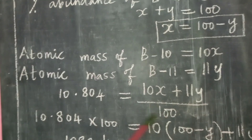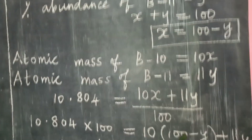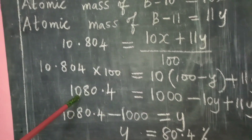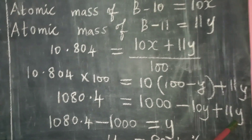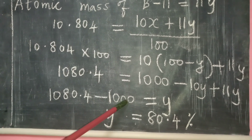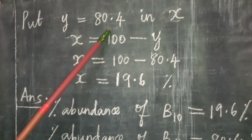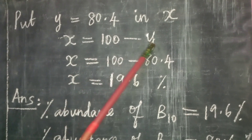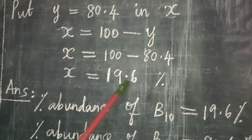Multiplying both sides: 10.804 × 100 = 10×(100 − Y) + 11Y. So 1080.4 = 1000 − 10Y + 11Y = 1000 + Y. Therefore Y = 1080.4 − 1000 = 80.4%. Substituting back: X = 100 − 80.4 = 19.6%.